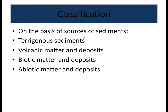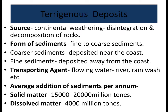On the basis of sources of sediment, ocean deposits can be classified into pterogenous sediments, volcanic matter and deposits, biotic matter and deposits, and abiotic matter and deposits. For pterogenous deposits, the main source is continental weathering, where disintegration and decomposition of rocks occur, reducing their size so they can be easily transported via flowing rivers, rainwash, etc.